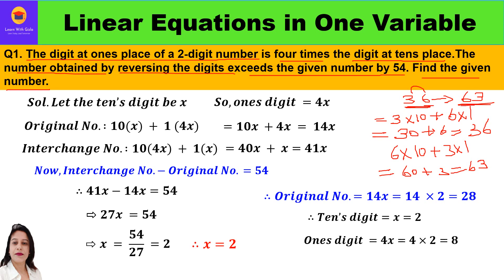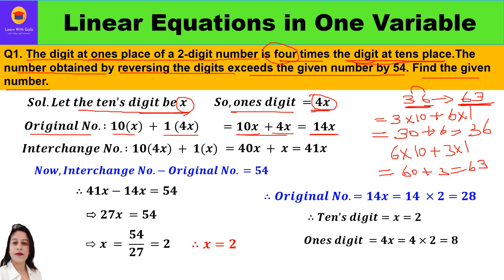Likewise, the question says the digit at the one's place is four times the digit at the tens place. Let the tens digit be x, so the one's digit will be 4x. The original number is formed as: 10 × x + 1 × 4x = 10x + 4x = 14x. So 14x is our original number.